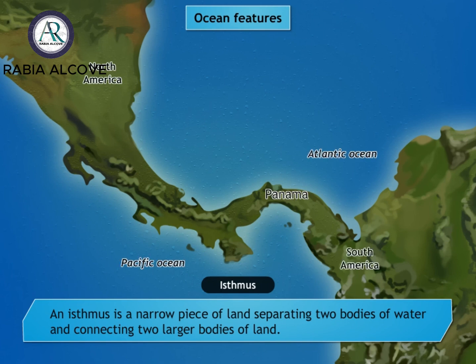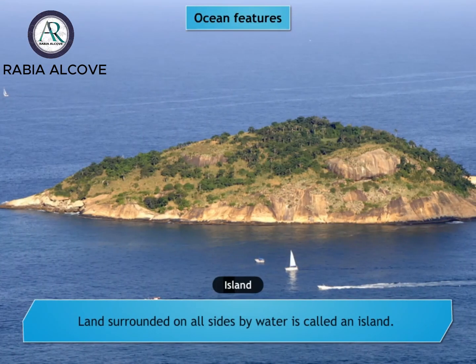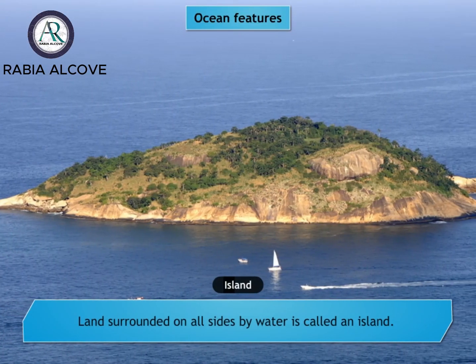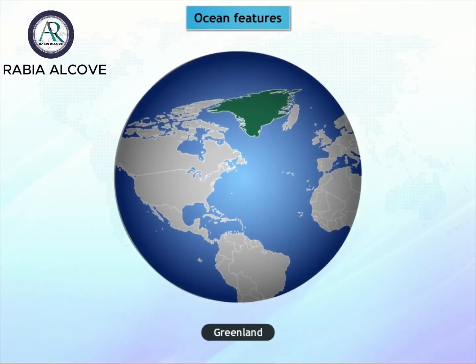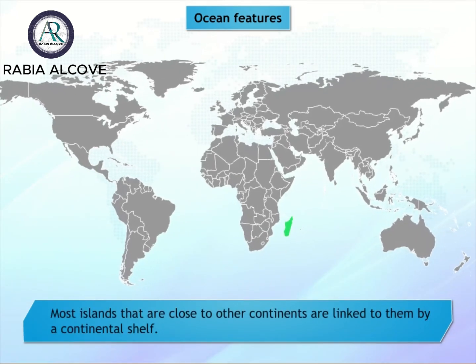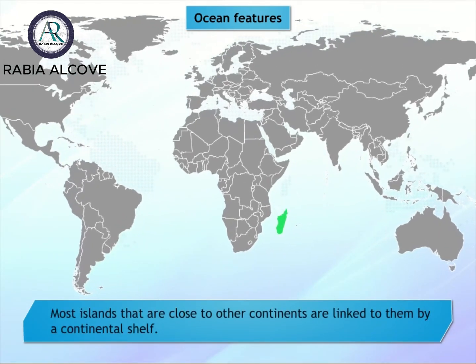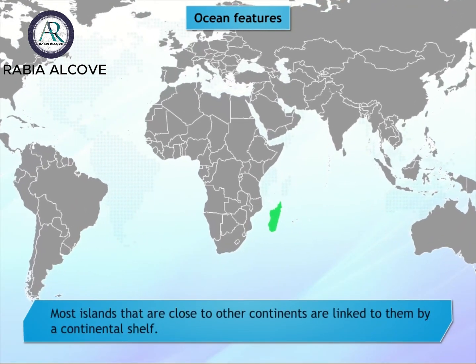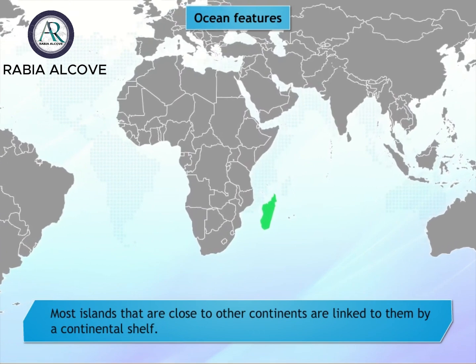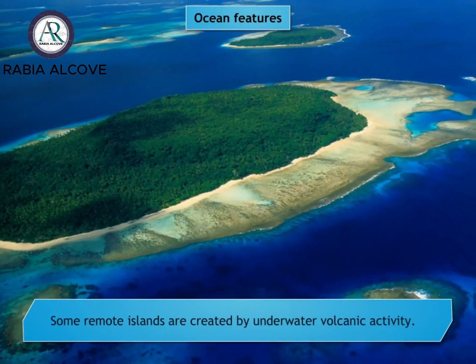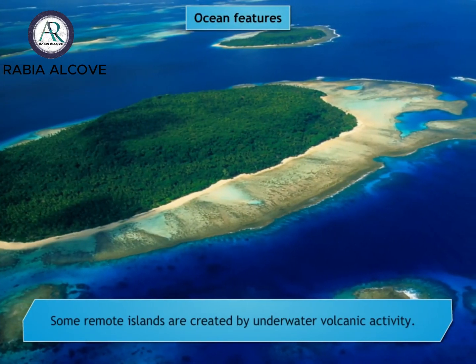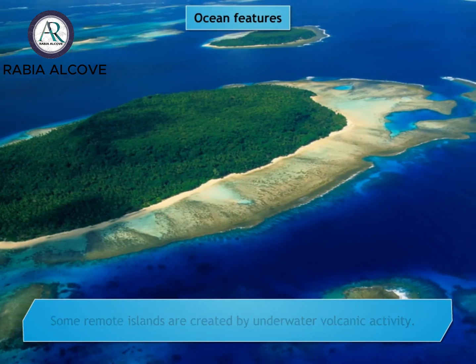Land surrounded on all sides by water is called an island. Most islands are tiny, and some are very large, like Greenland. Islands can be formed in a number of ways. Most islands that are close to other continents are linked to them by a continental shelf. Some remote islands are created by underwater volcanic activity. Some islands have been formed over a very long time by coral.